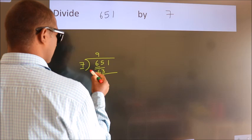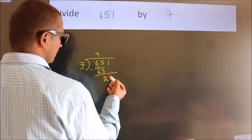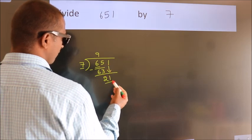Now we should subtract, we get 2. After this, bring down the beside number. So 1 down. So 21.